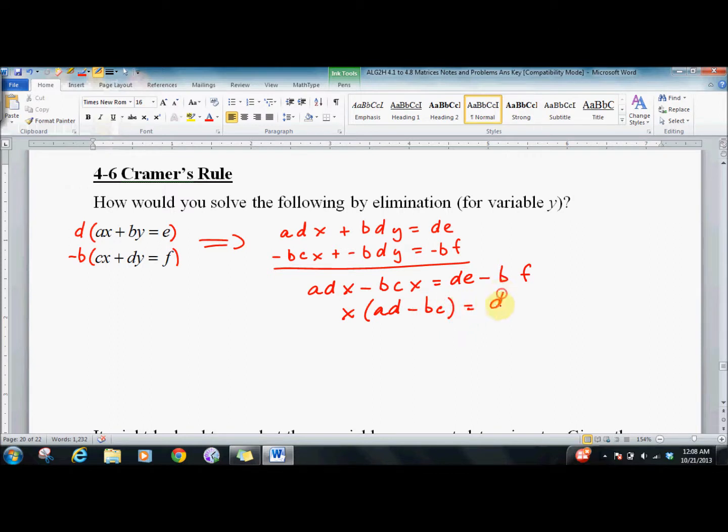Factor out the x: (ad - bc) equals de - bf. So x equals (de - bf) / (ad - bc).